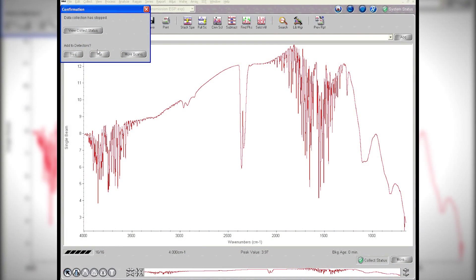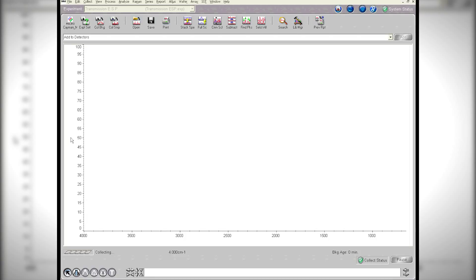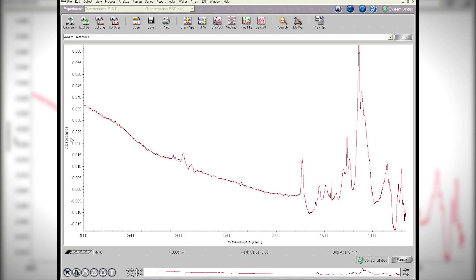I don't need to see the background, so I'm going to delete that. And then I'm just going to collect my sample. So now as it scans, you'll see it collect the sample, you can see the very smooth background and everything here.